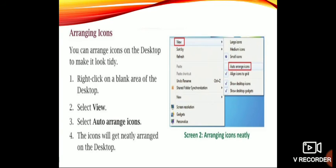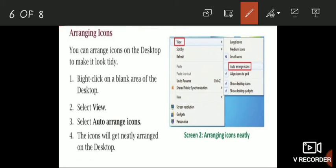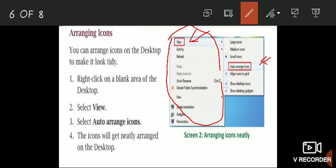Arranging icons: if you want to arrange icons on the desktop, right-click on a blank area of the desktop to see the menu. Select 'View', then select 'Auto arrange icons'. Once you click on auto arrange, you can arrange all the icons on the desktop.